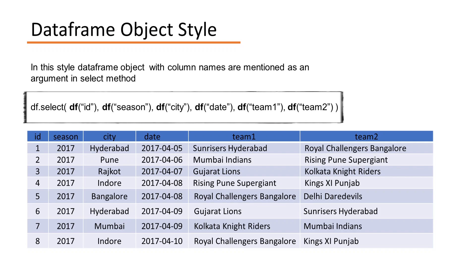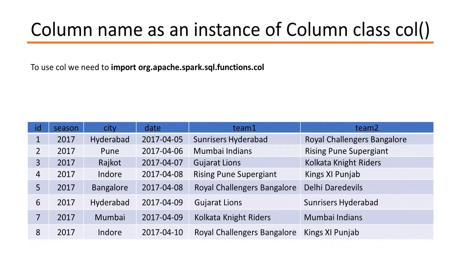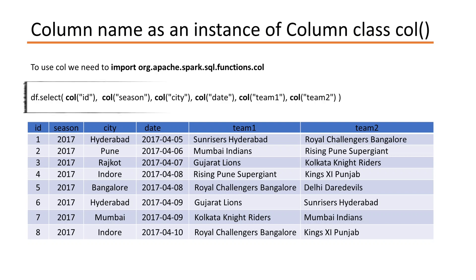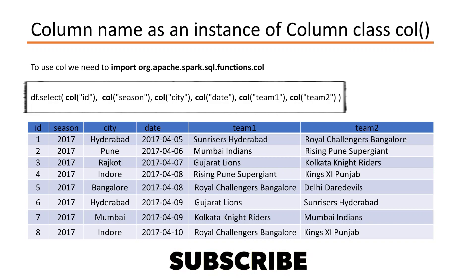We can also write the SELECT function using the column name as an instance of the column class. To use col, we need to import org.apache.spark.sql.functions.column. Then the SELECT function is written using col and the column names. For example: df.select(col("columnName")).